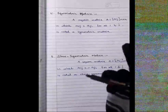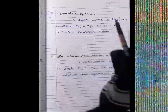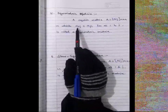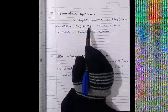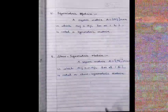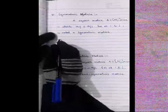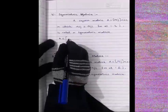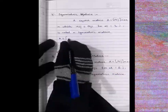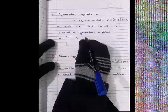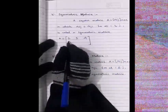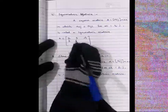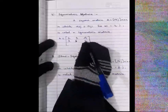Example of a symmetric matrix: compare with the general elements A₁₁, A₁₂, A₁₃, A₂₁, A₂₂, A₂₃, A₃₁, A₃₂, A₃₃. The condition Aᵢⱼ = Aⱼᵢ means reversing the subscripts gives the same value. So A₁₂ = A₂₁, A₁₃ = A₃₁, and A₂₃ = A₃₂. Diagonal elements can be any values.